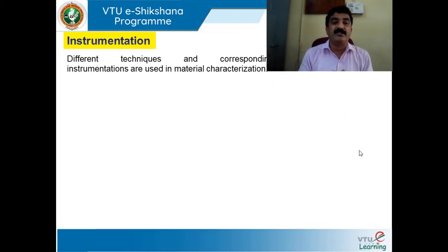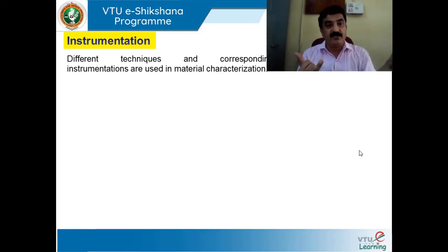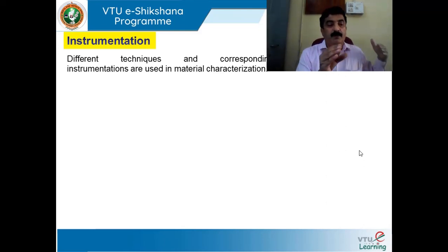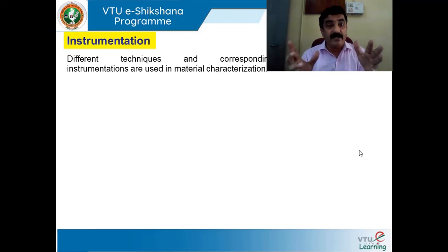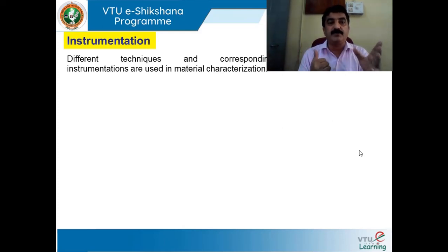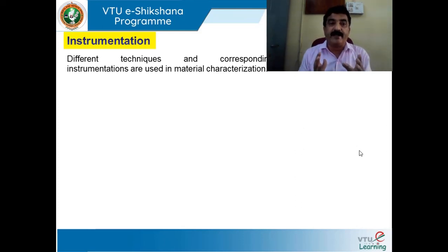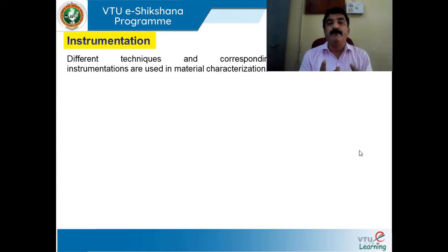For this characterization, I need instruments for material property study — whether it is property study, morphology study, or composition study, I need some instruments. For example, you pass light through a prism and the light splits into seven colors. If I want to see the wavelength of each color, I need an instrument — a spectrometer — which you might have used in your pre-university course for dispersive power calculation or wavelength calculation using diffraction grating. So for any characterization study, we need instruments, and different instruments are used in material characterization.